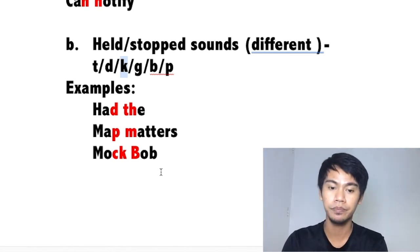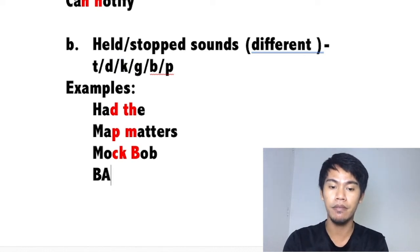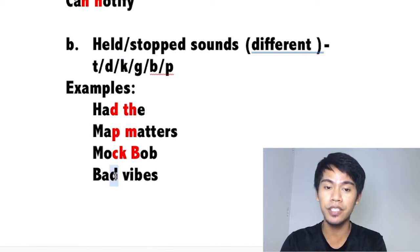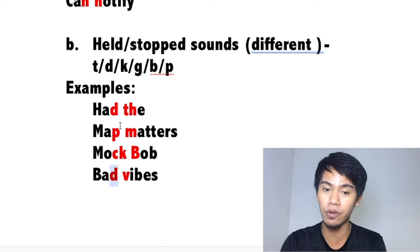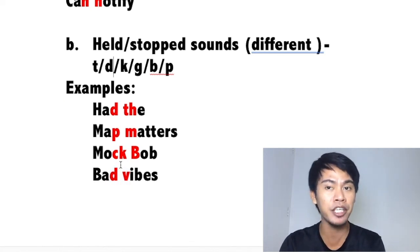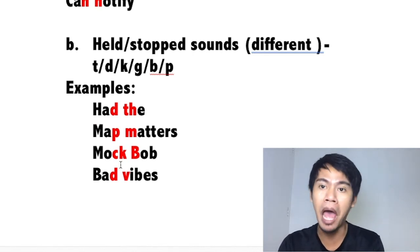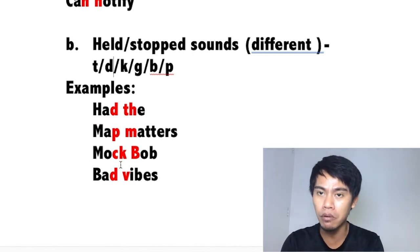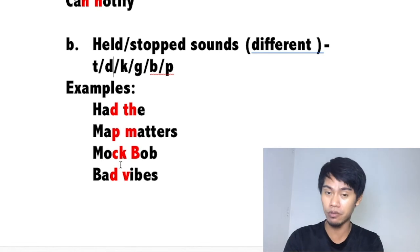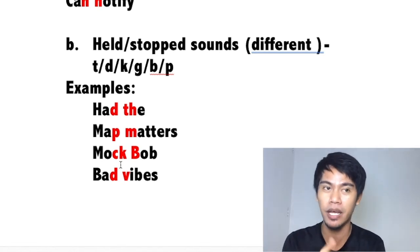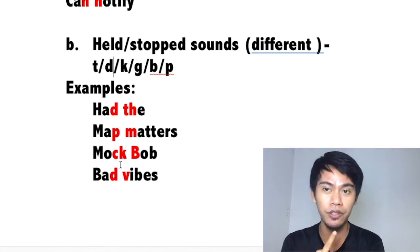For example: 'bad vibes.' They have different sounds — consonant, consonant. Do they have the same sound? No. Is the first sound of the second word a B? Yes — B is in the list. We can do the held sound. We say 'bad vibes.' We're not going to say 'bad vibes' separately — do the held sound: 'bad vibes.' Remember — initial placement of your articulators.